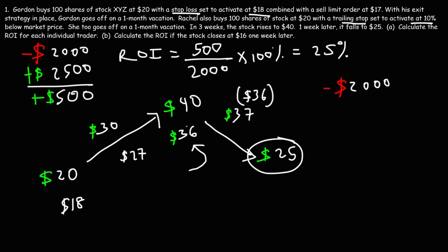But for the sake of simplicity, we're going to use $36 in this example. So the trailing stop feature sold Rachel's shares at $36 times 100 shares. She's going to receive $3,600 at the end of that trade for a net gain of $1,600.